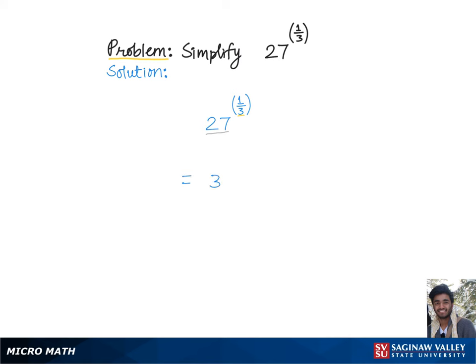So our problem becomes 3 cubed raised to the power of one-third. Now we'll further simplify this using the rule of exponents according to which we basically multiply the powers. So here we'll get 3 raised to the power of 3 times one-third.